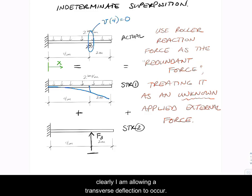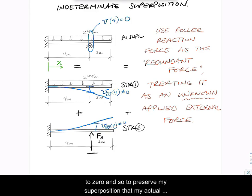And I would see here by drawing the deflected shape, clearly I am allowing a transverse deflection to occur. I'd have v1 at four is not equal to zero. And in my structure two, if I draw the deflected shape, I see also here I have a deflection at four which again is not equal to zero.